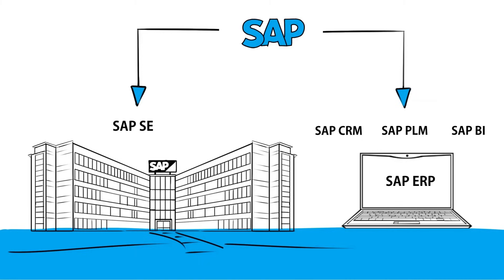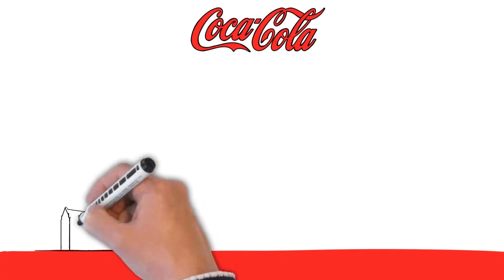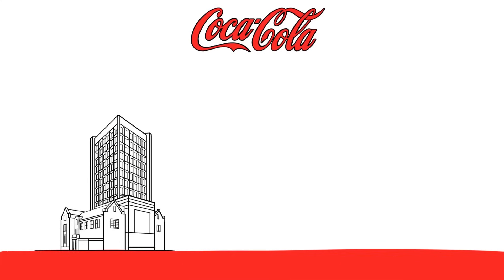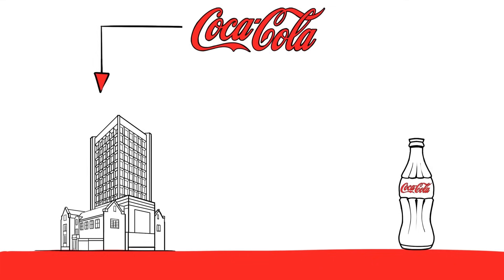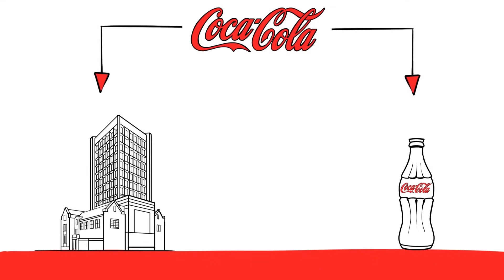Do you think it's too complicated? It's something like Coca-Cola. The Coca-Cola company produces the Coca-Cola drink, and both the company and the drink are commonly called Coca-Cola. You can hear someone say, 'My wife works in Coca-Cola,' meaning she works for the Coca-Cola company. But when you hear, 'My son likes to drink Coca-Cola,' everyone knows they're talking about the drink. It's very similar to SAP — we have the SAP company and the SAP product, which is software to manage companies.